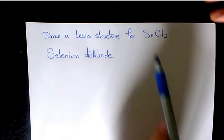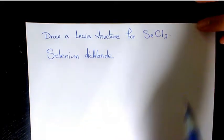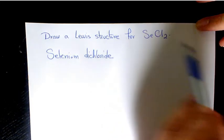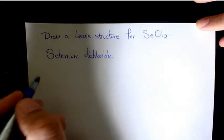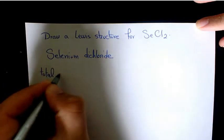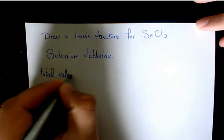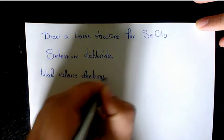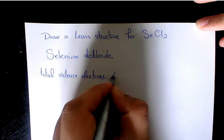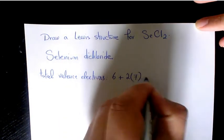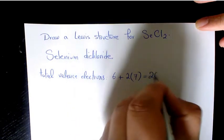So what we need to do: Se is the central atom here, so it's gonna be in the middle, and we have two chlorine on the other sides. But the first thing we need to do is find out total valence electrons, which in this case selenium has six electrons and chlorine has seven. We have two of them, so multiply by two, that's gonna give me 20 electrons.